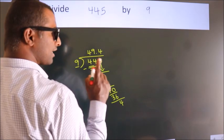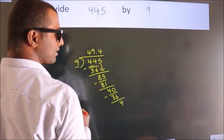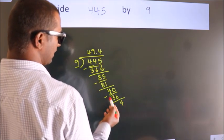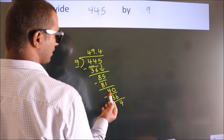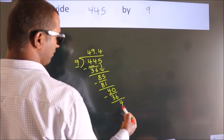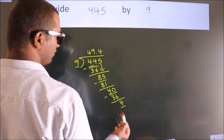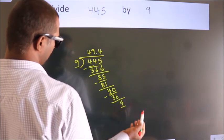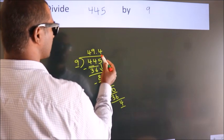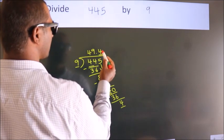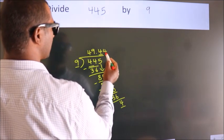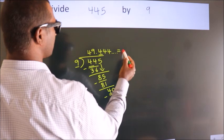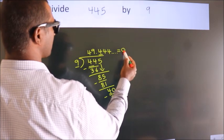Now observe: here we had 4, and we got 4 again. That means this number keeps on repeating. So this is our quotient.